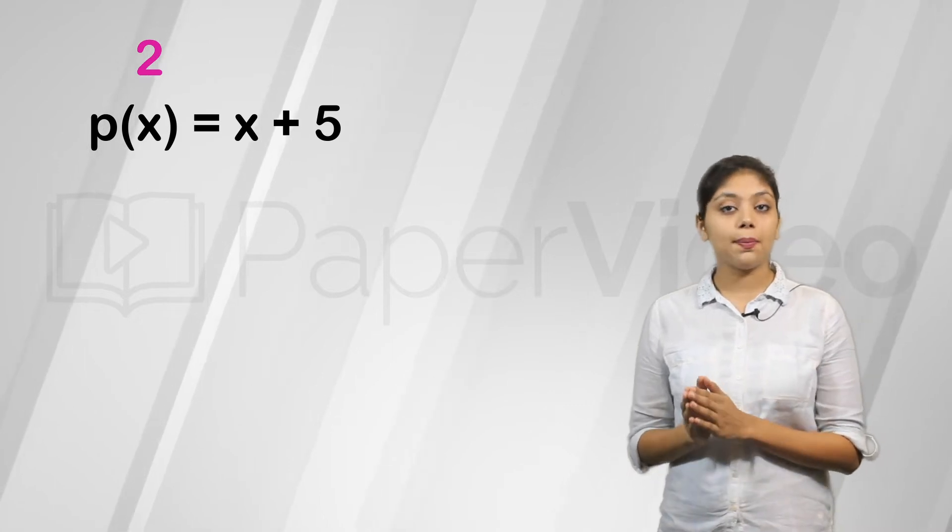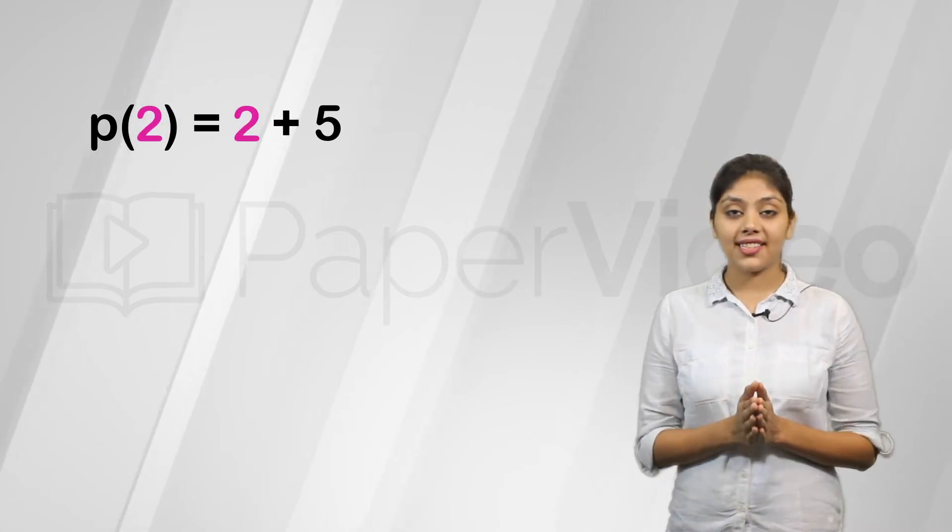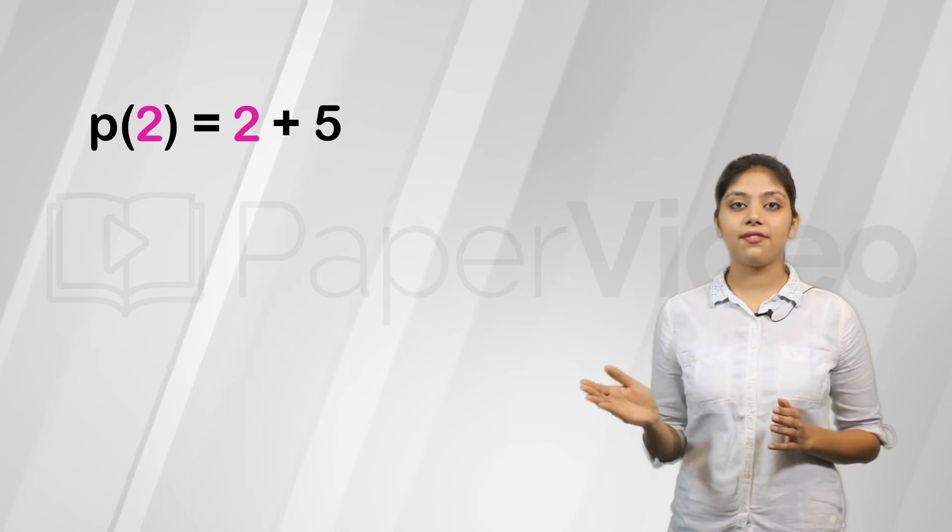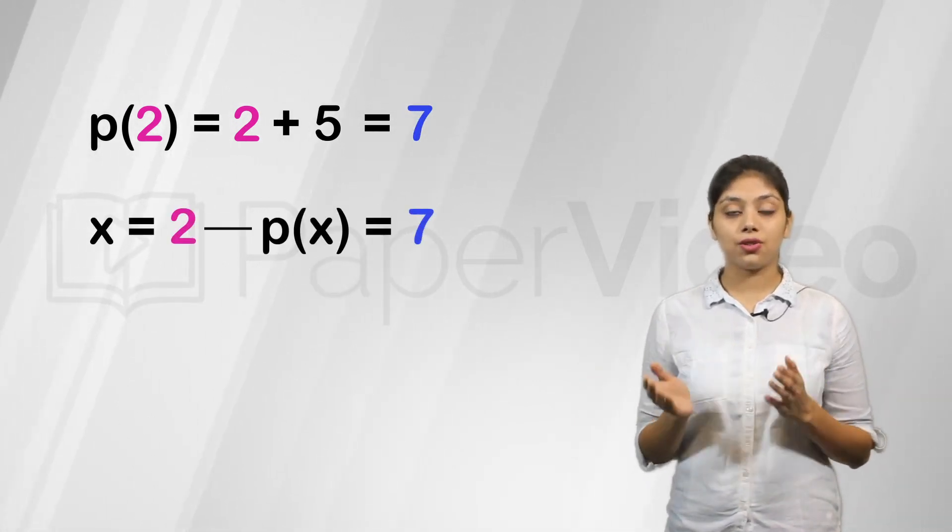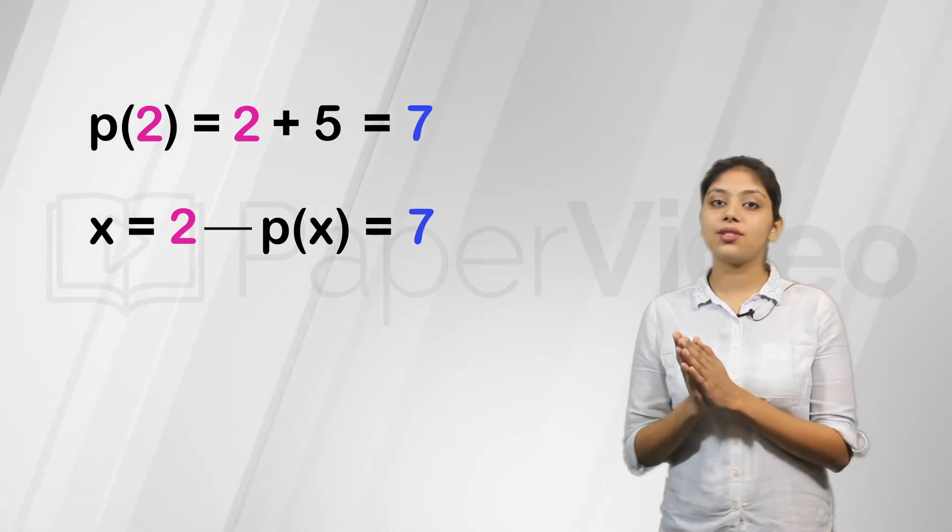Let us put 2 in the place of x. We can see that 2 plus 5 equals 7. So, we can say that when x equals 2, p of x equals 7.